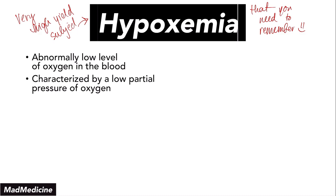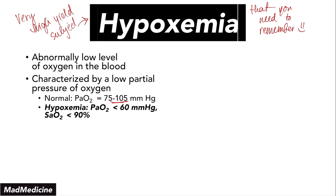Normally, the partial pressure of oxygen in our arteries is between 75 to 105 millimeters of mercury. In hypoxemia, however, the PaO2 — the partial pressure of oxygen in our arterioles — is going to be less than 16 millimeters of mercury, and our oxygen saturation is going to be less than 90%. If you don't remember what these values mean, I'm going to give you a quick review right now.